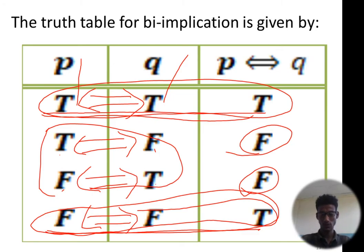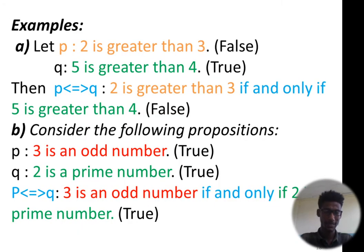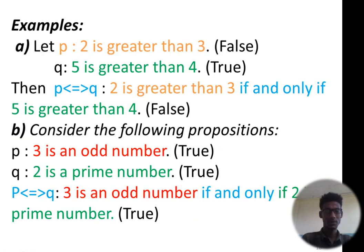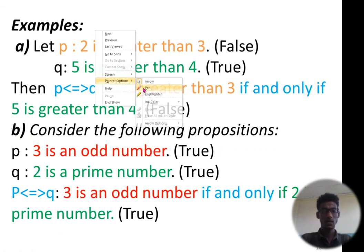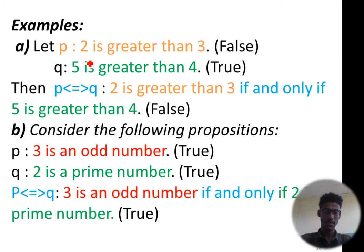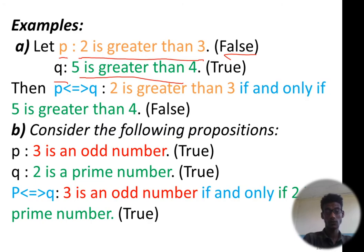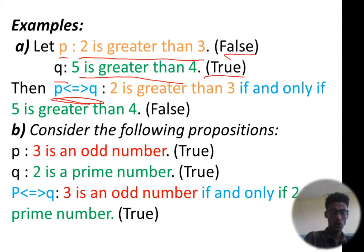The values are the same. There are implications for this. Example: Let P be '2 is greater than 3'. So Q is '5 is greater than 4'. We are going to use the answer. Then P implies Q. P by implication Q.